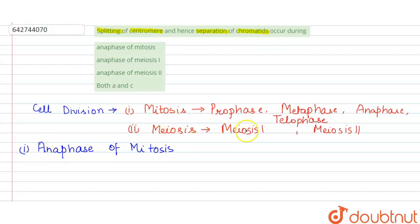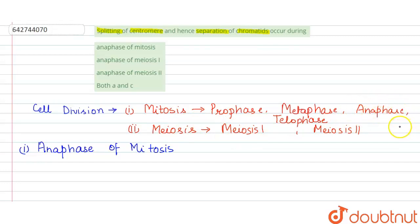In meiosis one, it also has all these phases: prophase one, metaphase one, anaphase one, and telophase one. In metaphase there is alignment, and in anaphase there is a separation — but in meiosis one, during the anaphase, the centromere remains intact. There is no splitting of the centromere and hence no separation of the chromatids.